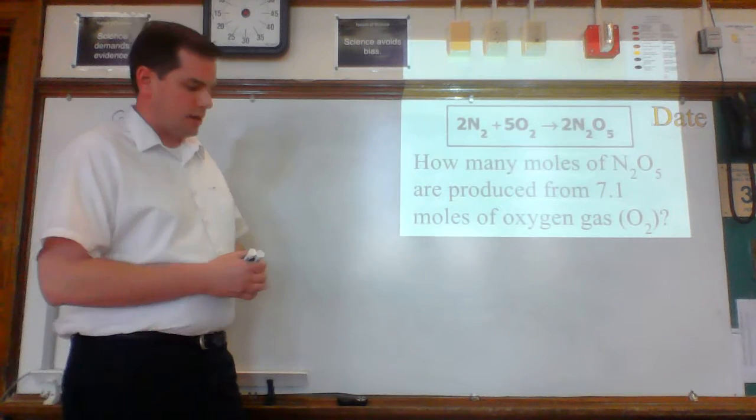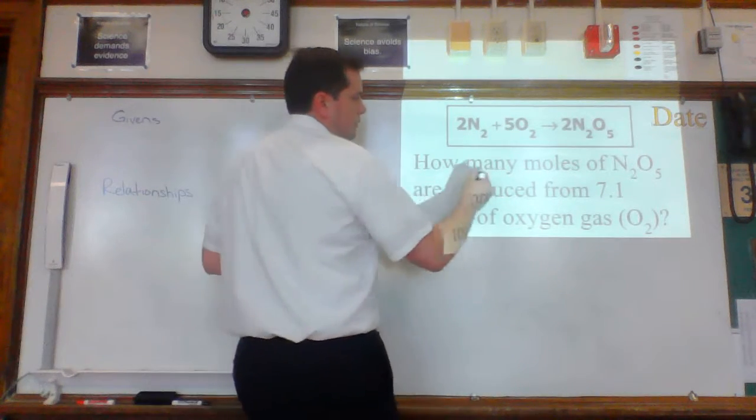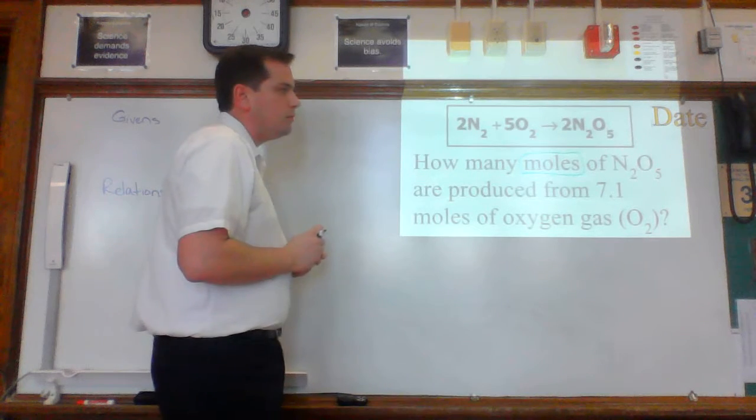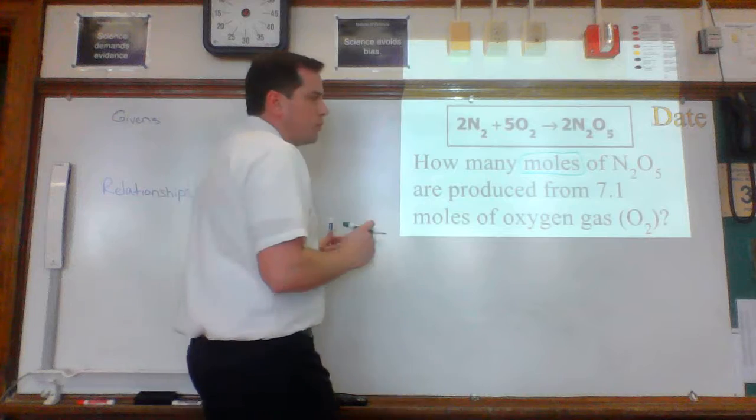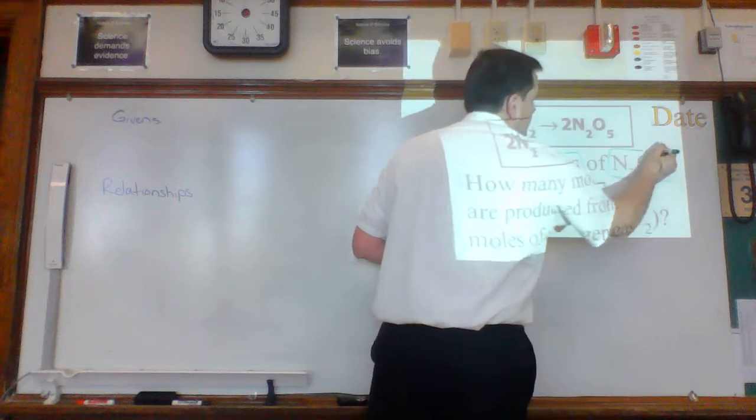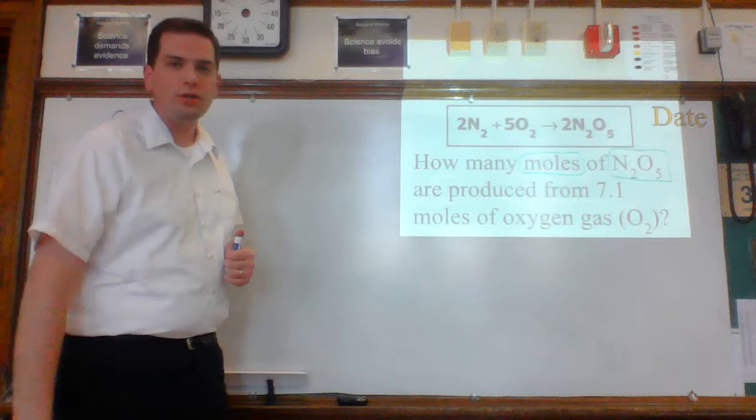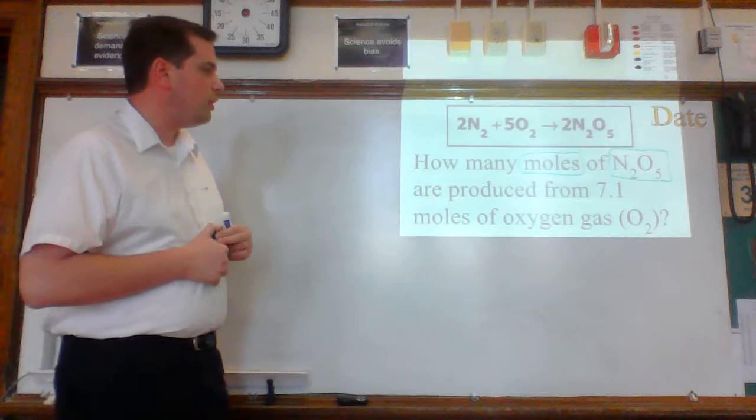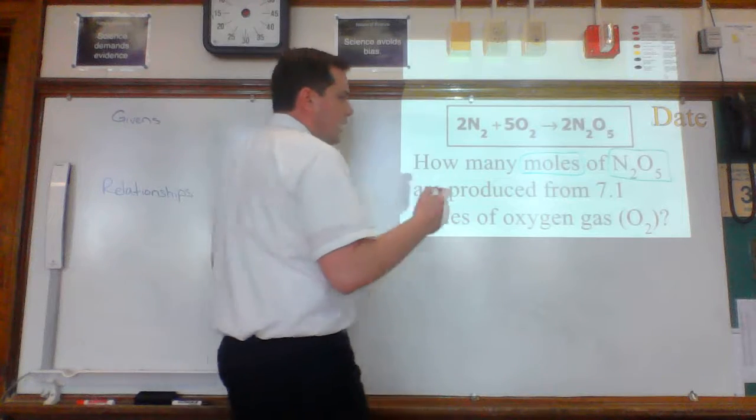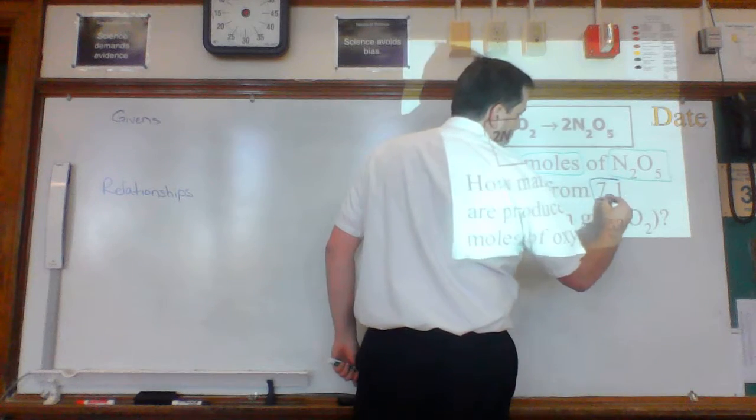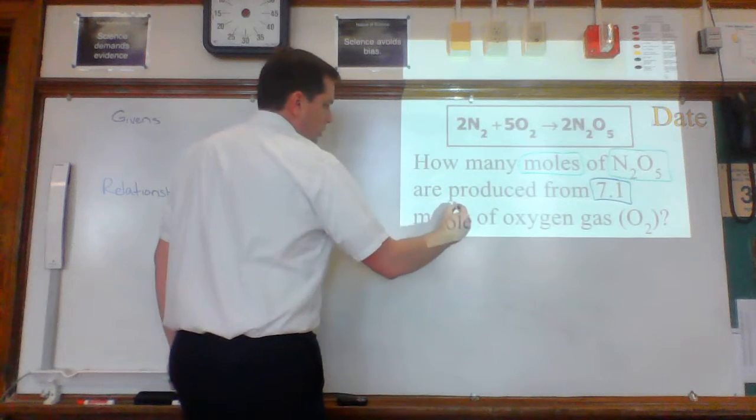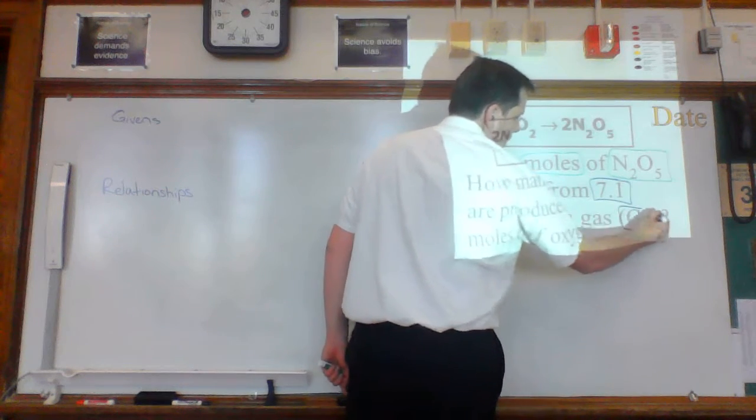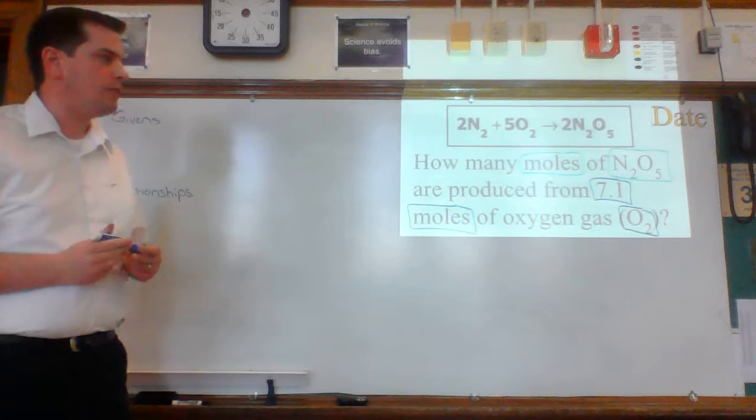Here's the question. How many moles, how many is my question phrase, so moles is my unknown, and this is where it's really important to pay attention to the chemical. This is the chemical that we're talking about, N2O5, are produced from 7.1 moles of oxygen gas. 7.1 is the number, moles is the unit, and O2, oxygen gas, is the chemical.